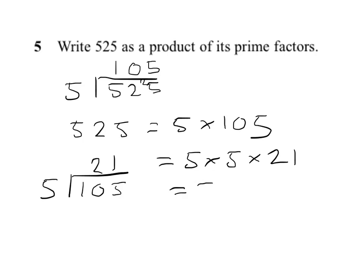Now, the 21 is fairly easy to write as a product, and we can write that as 3 times 7. Now, at this stage, all of the factors are prime factors, so we have finished the question.